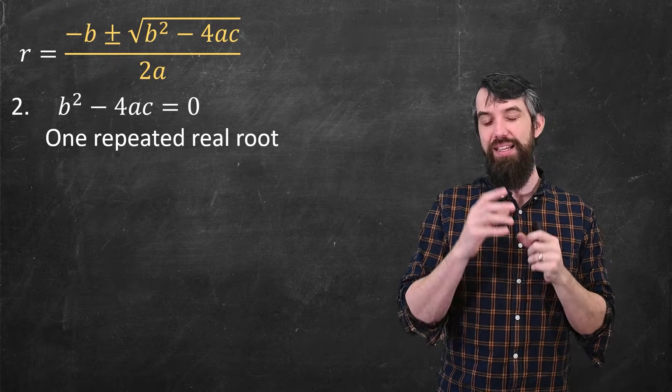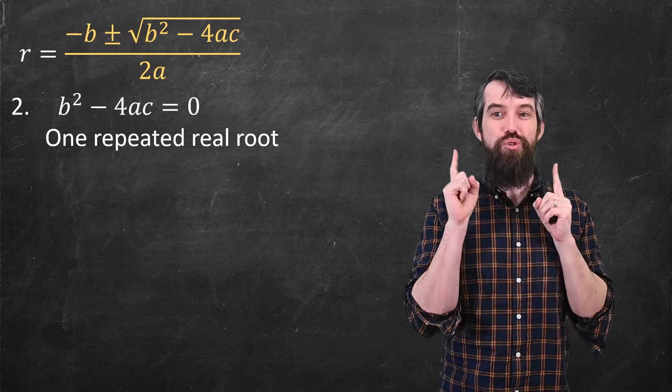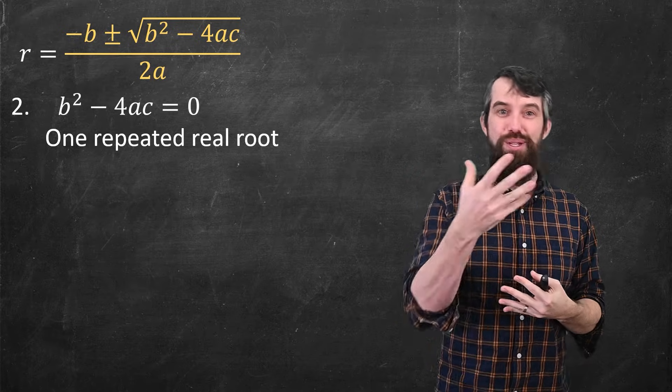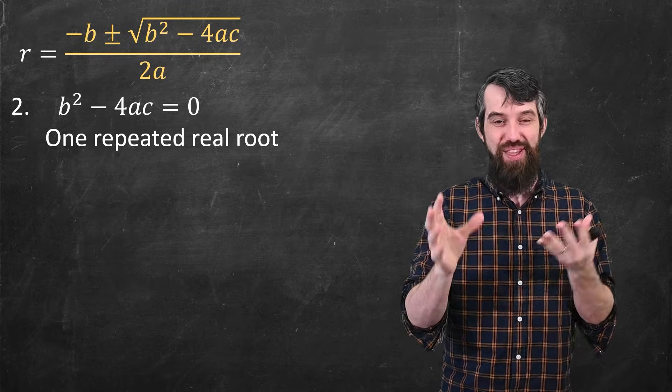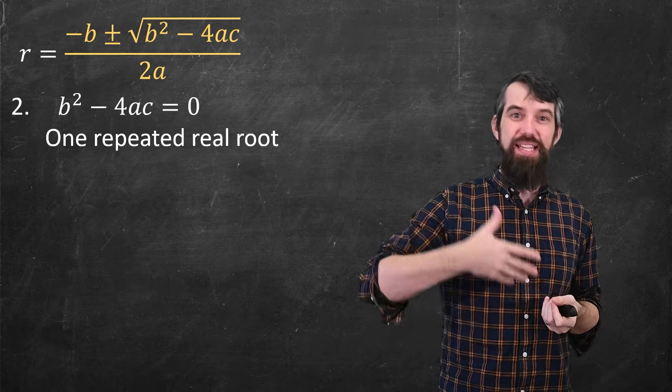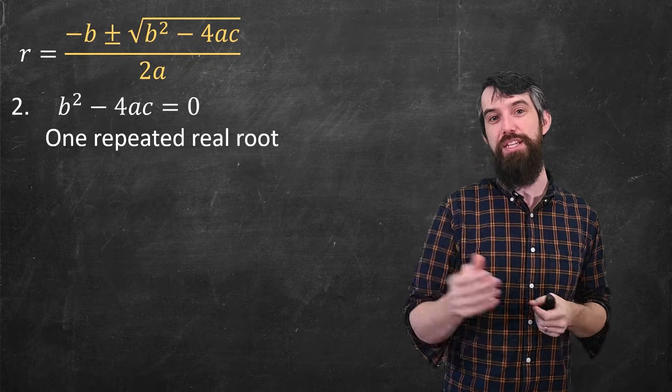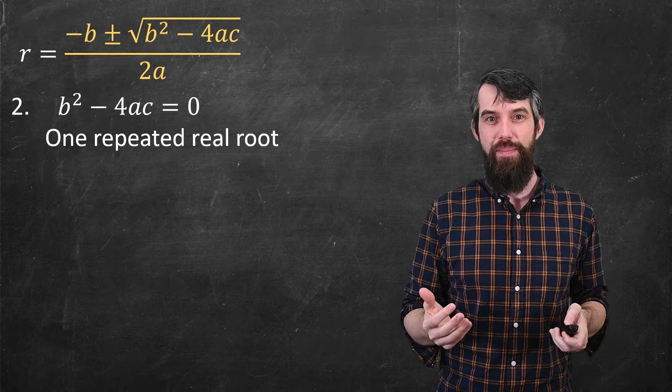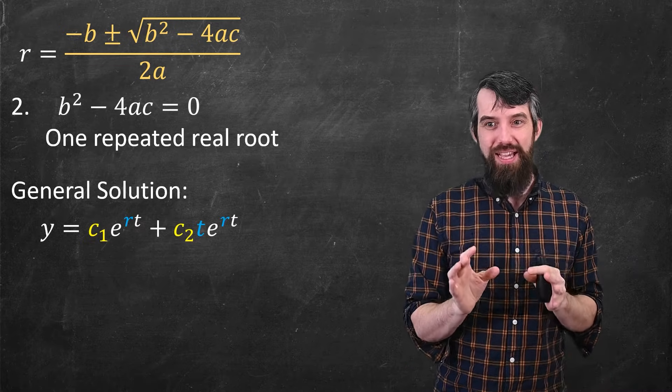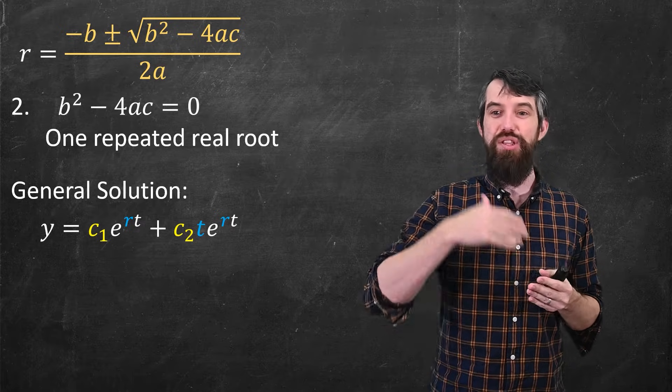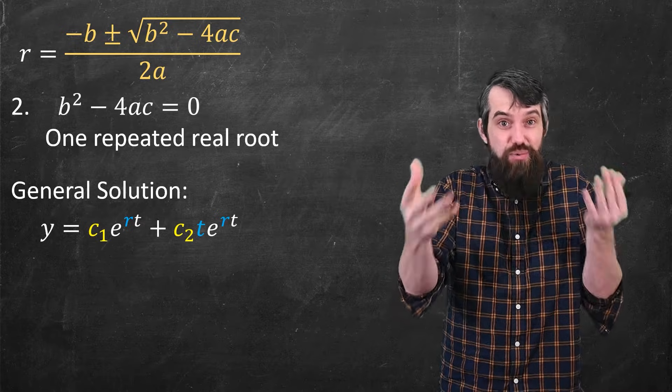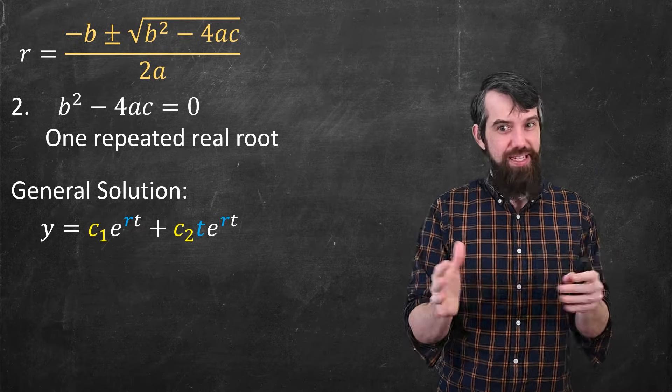Next case is you have a repeated root. That's when b squared minus 4ac equals zero. You're taking plus or minus zero, so there's not two different things, only one. So what can you do? One solution would be e to whatever that root r times t would be. But what about the other? Notice this trick we do here. The trick is I'm going to take e to that root rt. Notice there's no longer an r1 and r2 because there's only one root, a repeated root.